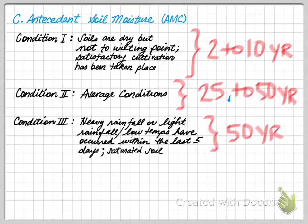To summarize: Condition 1 is for 2 to 10-year storms. Condition 2 is usually for a 25-year storm, or a storm less than a 50-year event. Condition 3 is for storms greater than a 50-year storm. We'll describe what storm frequency means next week when we discuss rainfall.